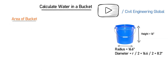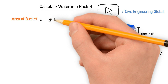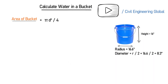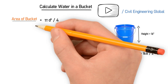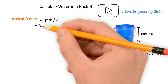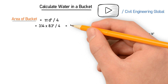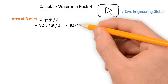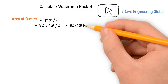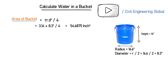Let's first find out the area of the bucket — how much is the total area. For this we have the formula: π × d² ÷ 4. Putting in the values, pi is 3.14 and d is 8.3, so 3.14 × (8.3)² ÷ 4 gives us 54.6875 square inches. This is the area of the bucket.